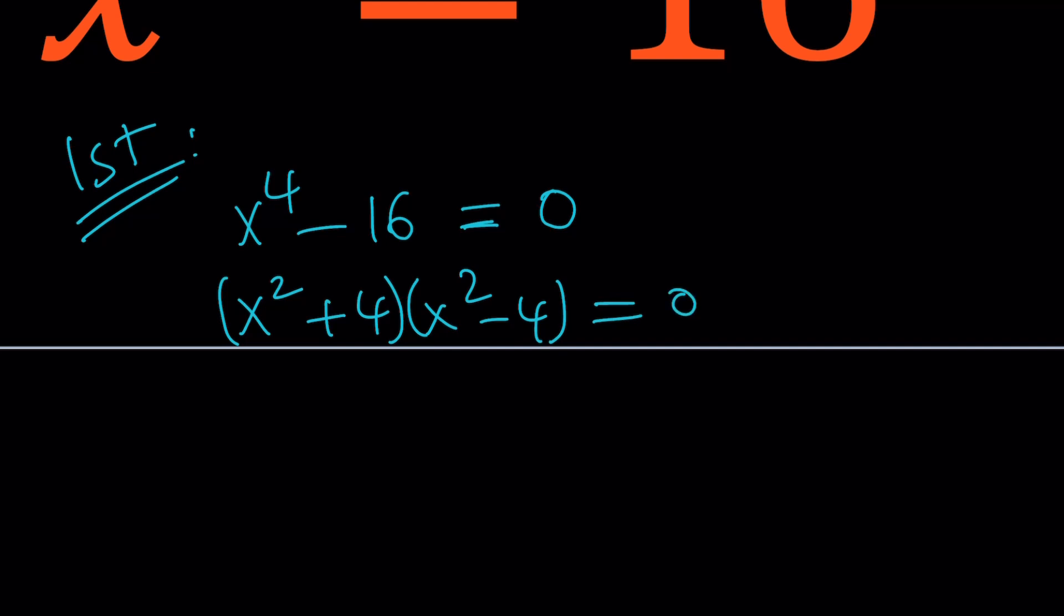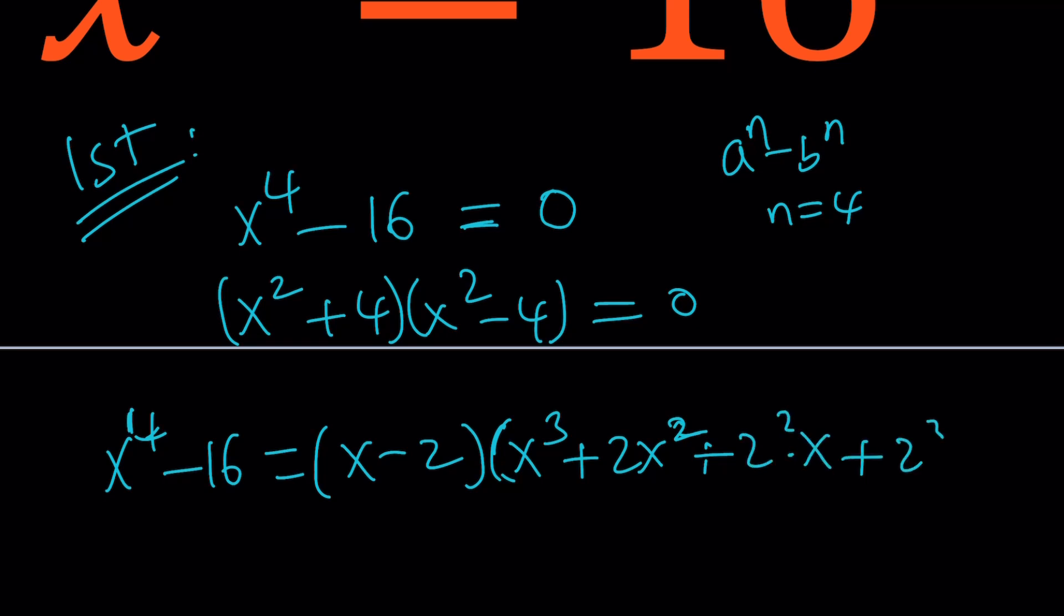Obviously, you can also use a to the nth minus b to the nth formula for n equals 4 and write it as the product of a linear factor and a cubic factor, but then you'll also have to deal with that cubic and so on and so forth. So what I mean by that is you can write this as x minus 2, and then the second factor is just going to come from the lower powers of x: x to the third power, and then plus 2x squared, and then plus 2 squared x, and then plus finally 2 cubed, which is 8.